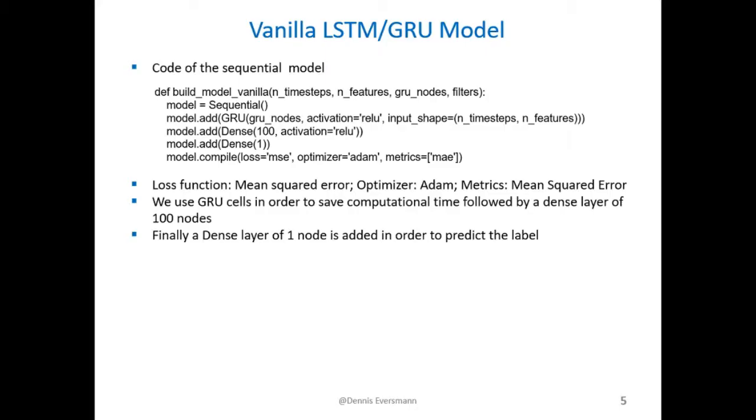For each model architecture I created a function. Each function takes four arguments where the first argument is the number of timestamps. The second argument is the number of features which is equivalent to the number of preceding values taking into account for the prediction. The third argument is the number of LSTM cells. And the fourth argument in the case of a CNN network is the number of filters used in the CNN network.